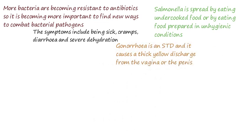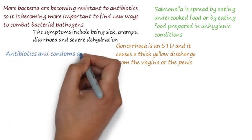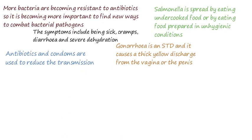Gonorrhoea is an STD, or sexually transmitted disease. The immediate symptoms include a thick yellow or green discharge from the vagina or the penis. It was easily treated with the antibiotic penicillin, but now many resistant strains have appeared. Antibiotics are used to reduce transmission, but contraception such as condoms can also be used to prevent it.